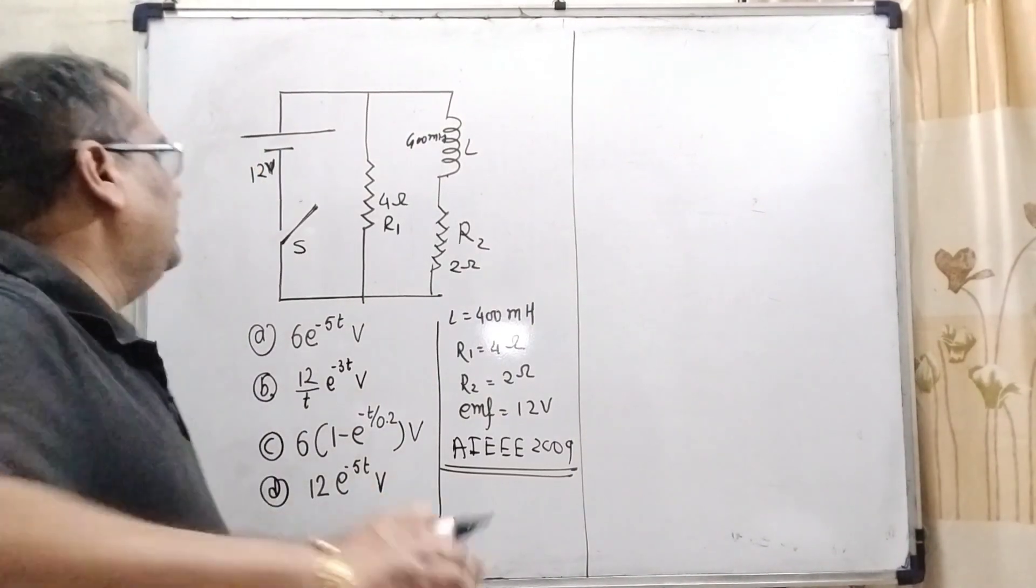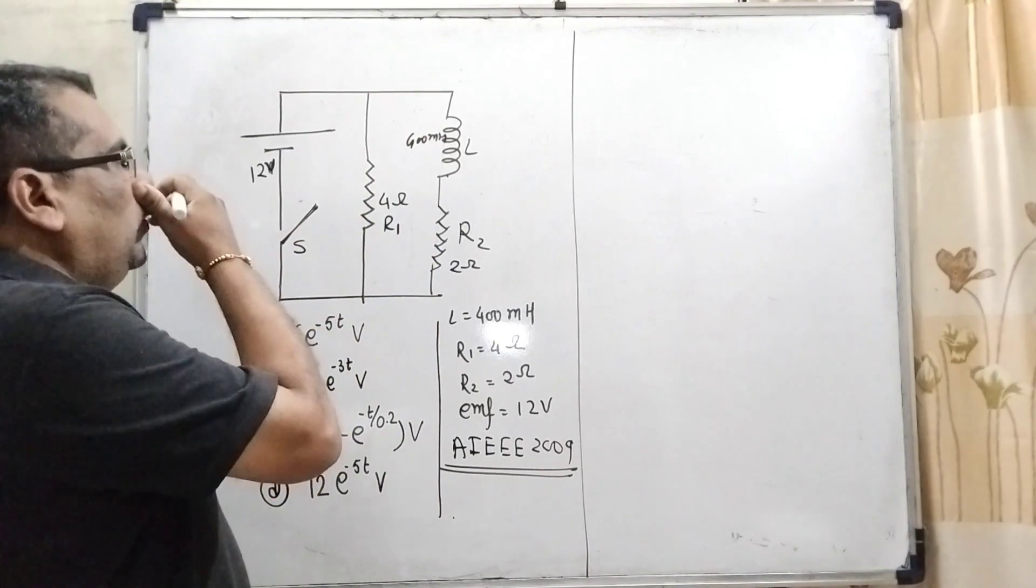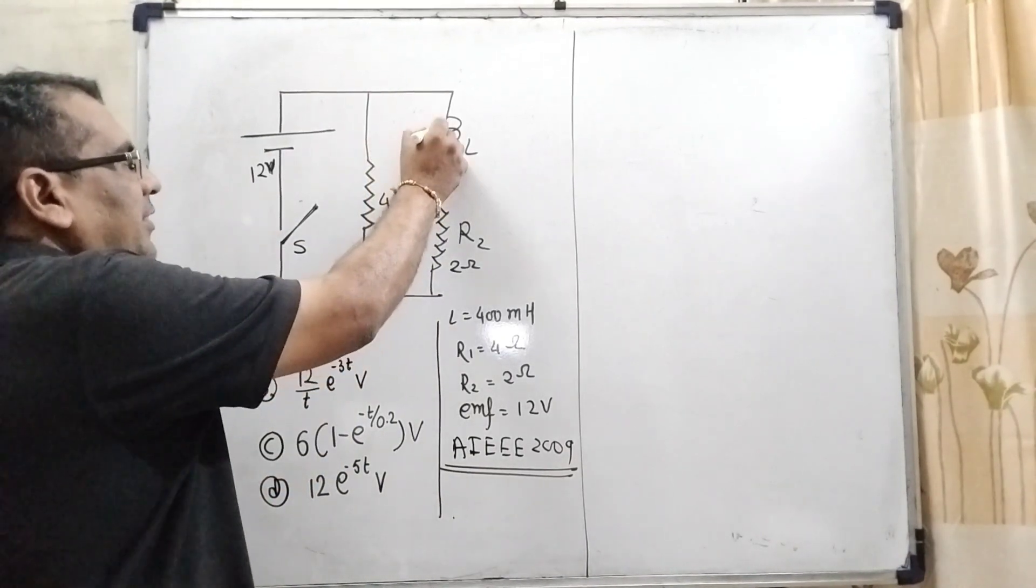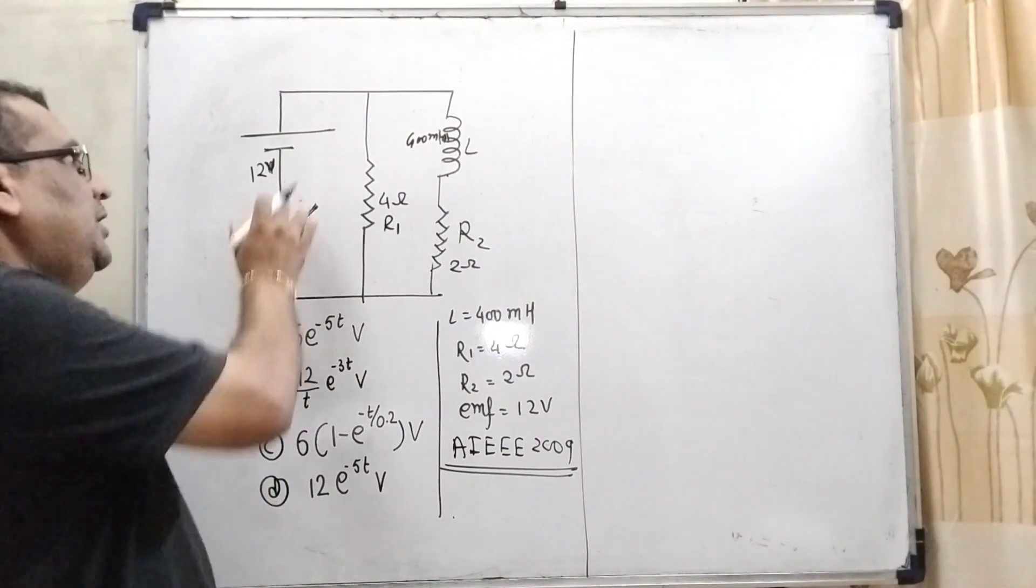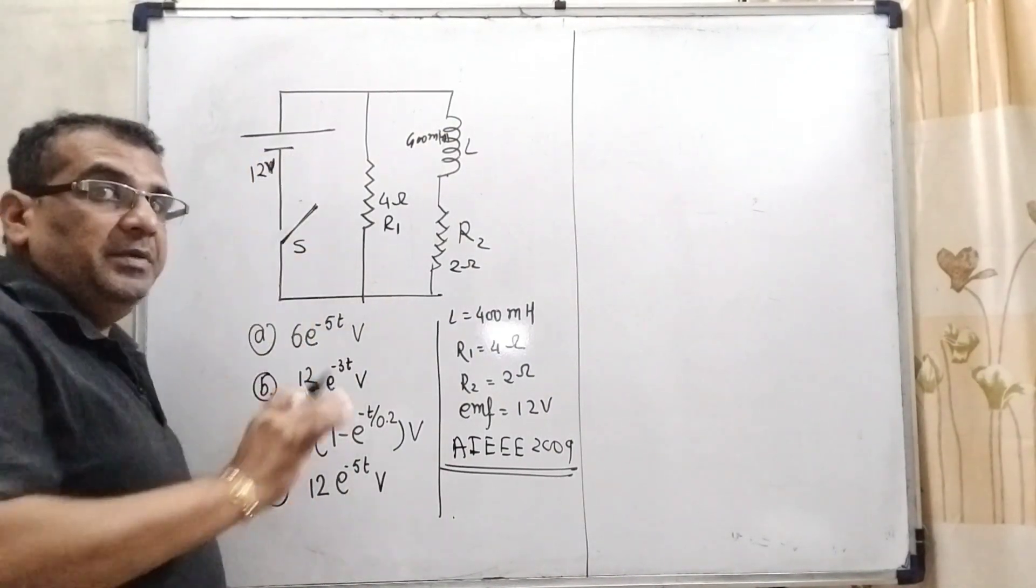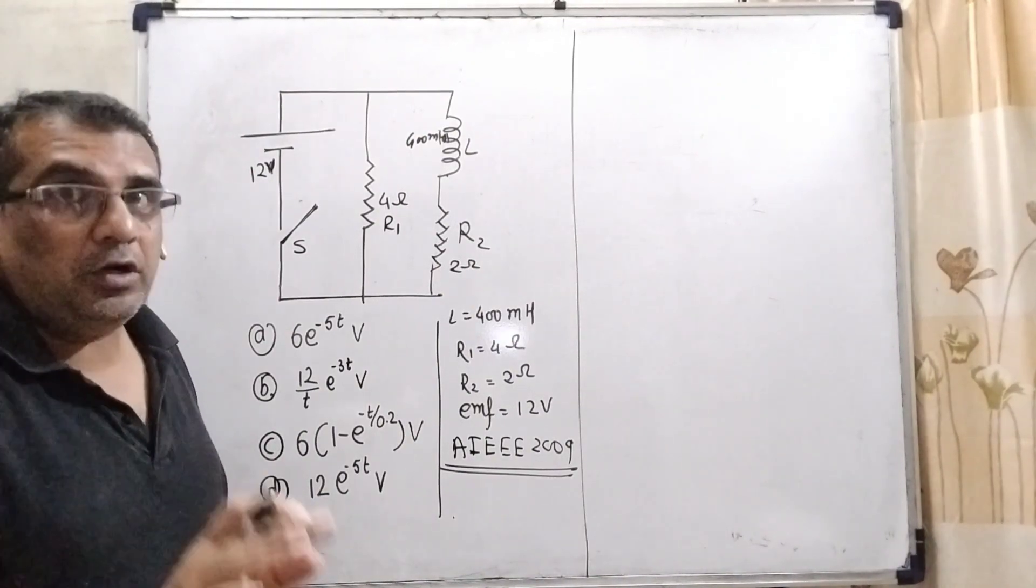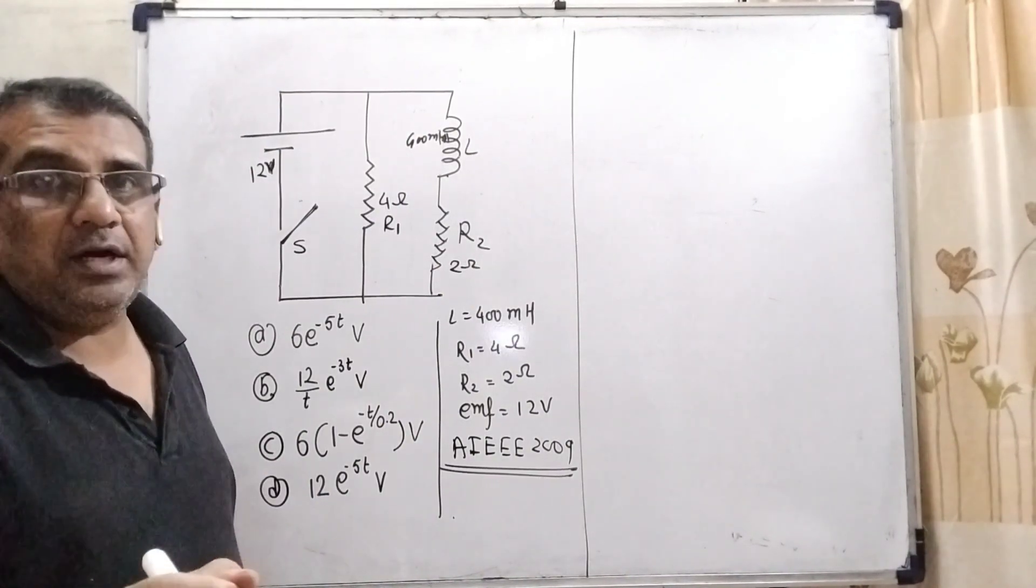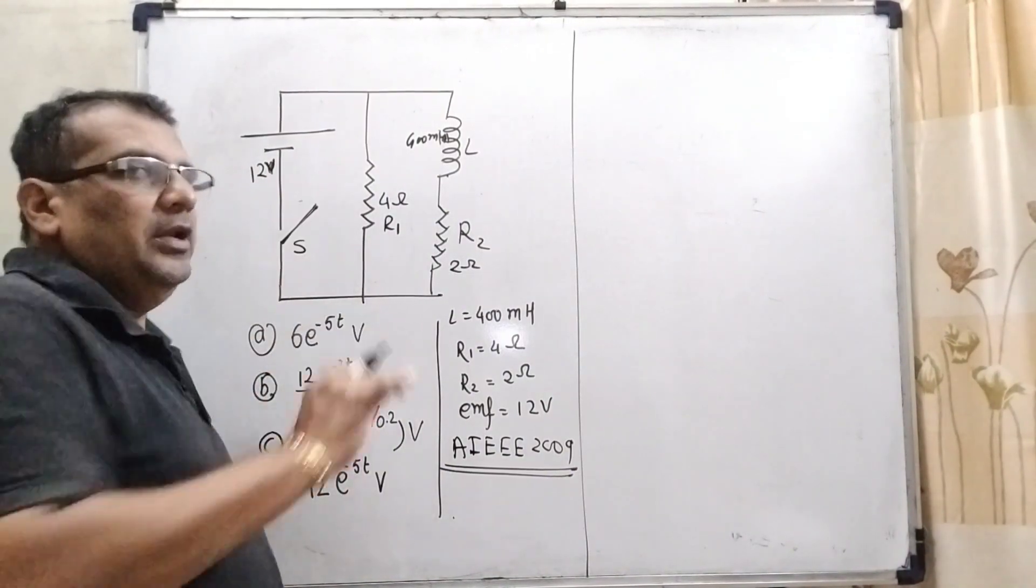Now in this question, we have given a battery of 12 volt. Here switch S, here R1 is 4 ohm, inductor is 400 mH and R2 is given 2 ohm. Here one thing very important: here we have given a battery, which means direct current, not alternating current. So therefore, we have not put here V equal to V0 sin omega T or E equal to E0 sin omega T. We have to put direct value.